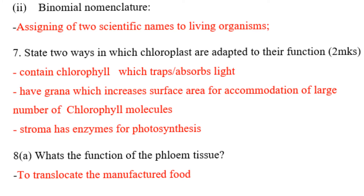Question number seven: State two ways in which chloroplasts are adapted to their functions. Number one, they contain chlorophyll which traps light. Number two, they have grana which increase surface area for accommodation of a large number of chlorophyll molecules.